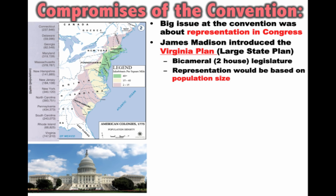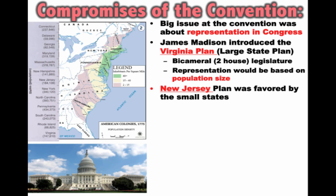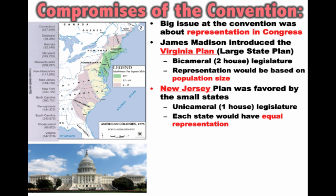James Madison introduced his plan called the Virginia Plan — sometimes called the large state plan. This said they should set up a bicameral, two-house legislature where representation would be based on population: the more people living in the state, the more representatives in Congress. Clearly, small states didn't like this plan and had their own plan — the New Jersey Plan — which favored a unicameral legislature where each state would have equal representation.